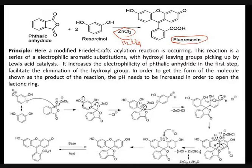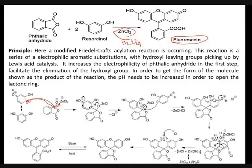It will form this structure. This is the resonance structure of phthalic anhydride, where there is a deficiency in carbon, so it will act as an electrophile and the nucleophile will attack on it. That ring will connect here, and in the presence of Lewis acid ZnCl2, the charge will delocalize on this ring and there is a removal of the double bond to single bond.